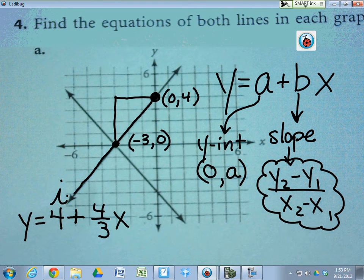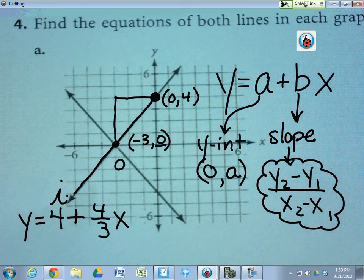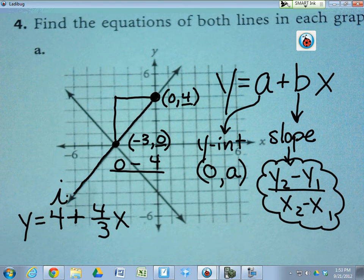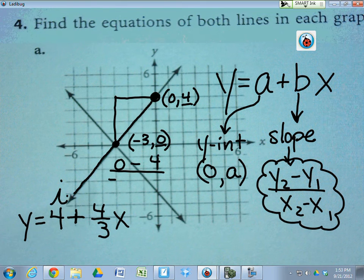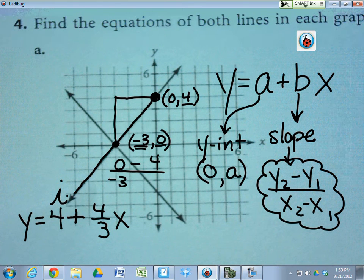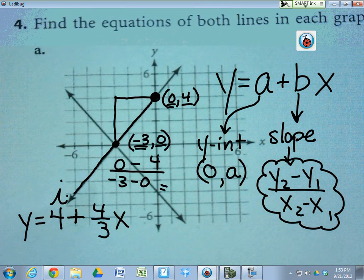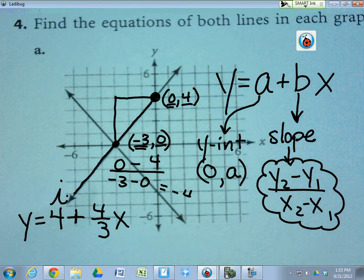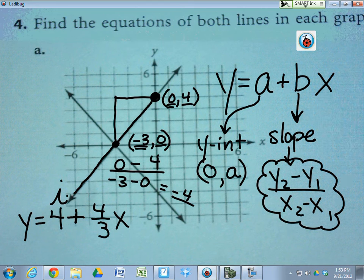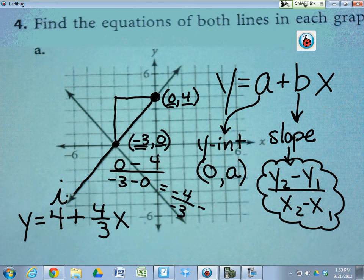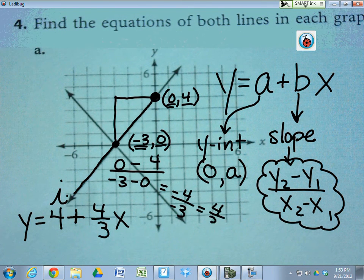The change in Y would be zero minus four over the change in X, which would be negative three minus zero. Zero minus four is negative four. Negative three minus zero is negative three, and that's four-thirds.